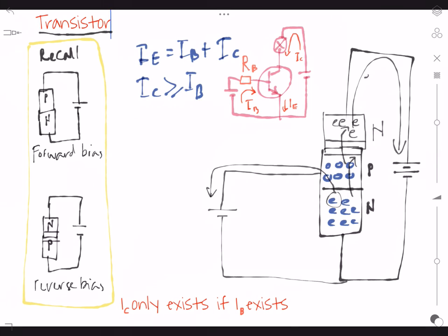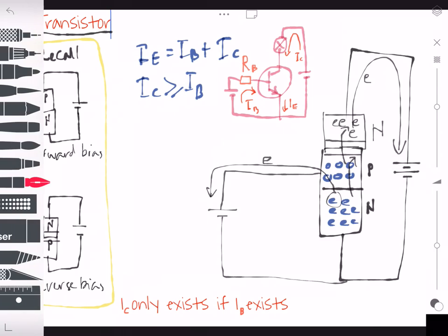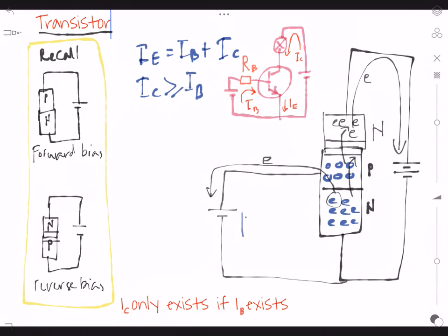Remember this is flow of electron, not current. So when there is a flow of electron, there will be a flow of current in opposite direction. So we have current flow in opposite direction.